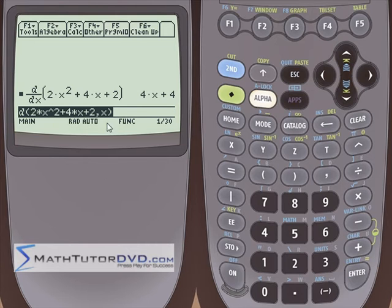So we hit enter and almost instantaneously it comes out with the correct answer. The derivative of this first term, 2 times 2 is 4, so we have 4x right here. And the derivative of this term is just going to be 4 because it's the only thing sitting in front of the x. And that's what we have here. The derivative of a constant is 0.